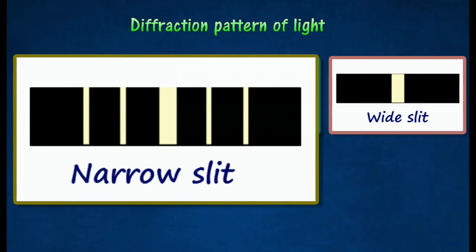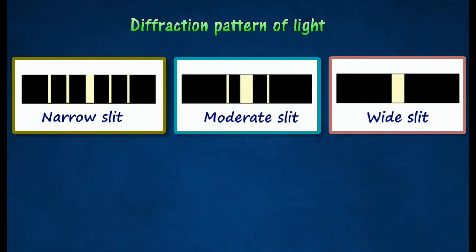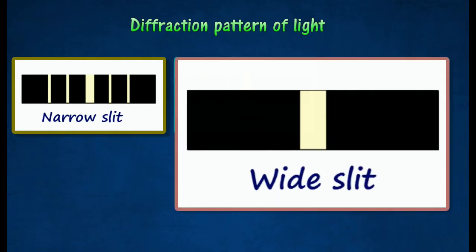There is less spreading and the bright fringes are closer to each other when light passes through a slightly enlarged slit. The diffraction of light through a large slit is very small, and only one single bright fringe can be seen.